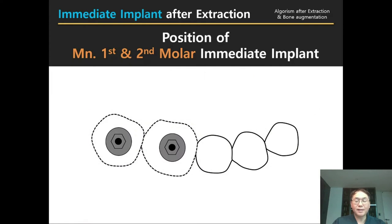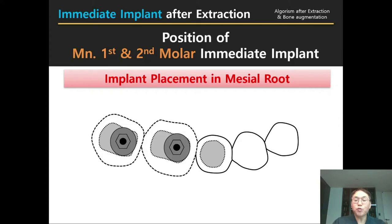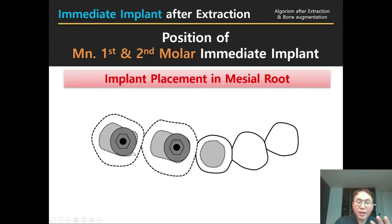When placing two implants in tooth numbers 6 and 7 — first and second molar area — the ideal position is along the septal bone at the center of the lacerative crown. If you cannot drill through the septal bone, you can move your two implants to the mesial side, placing them along the mesial root. By splitting these two implants, we can make an ideal size and shape of crown. In the mandibular second molar area, the crown should be slightly smaller than the natural tooth.